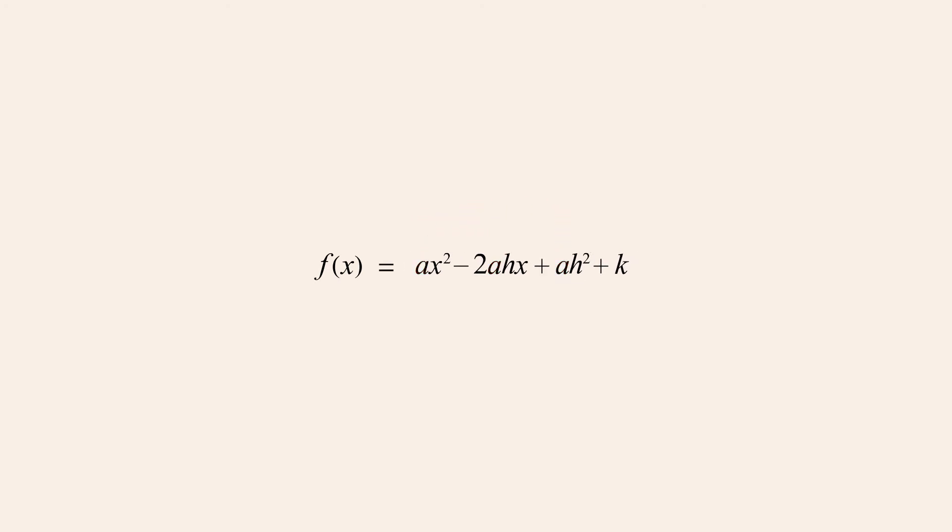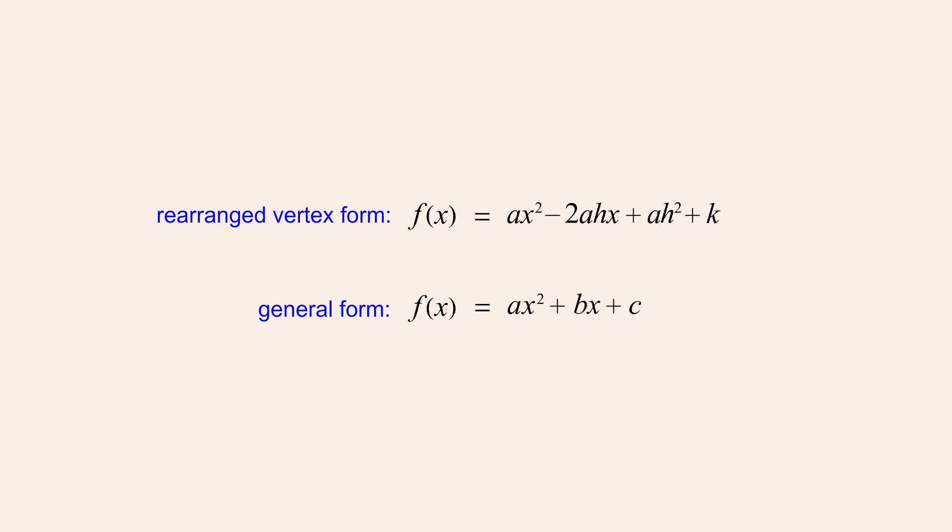Now, if we compare this rearranged vertex form of the function to the general form, we see that the coefficients of x squared are identical, but the coefficients of x are different, and the constant terms are different.